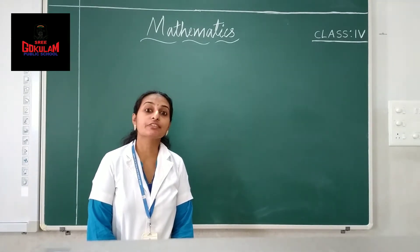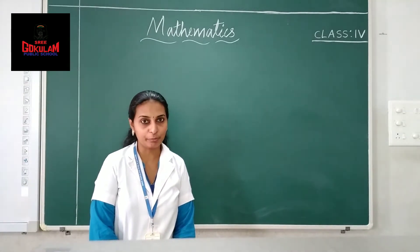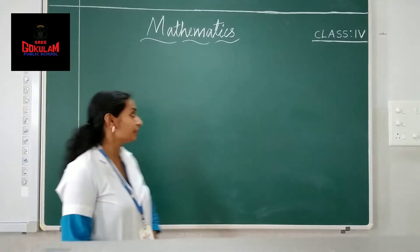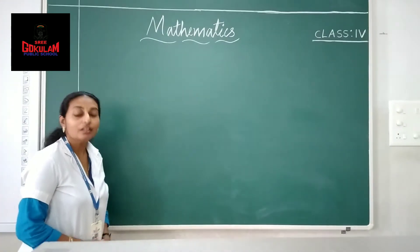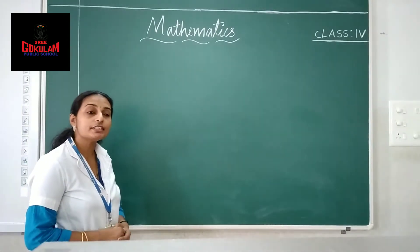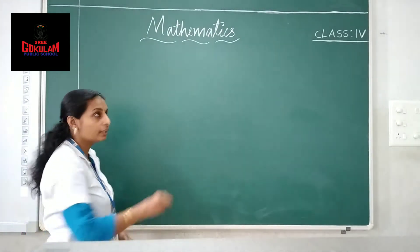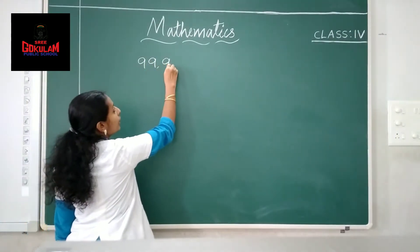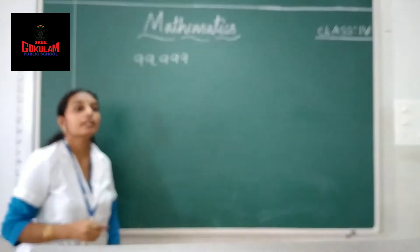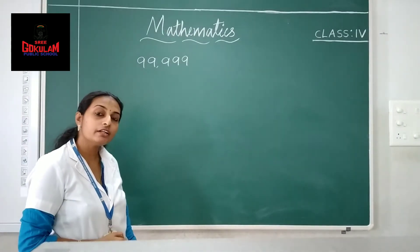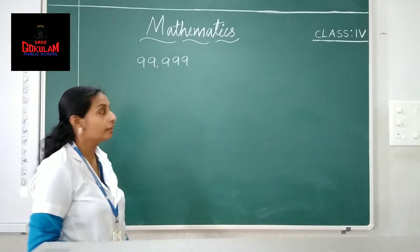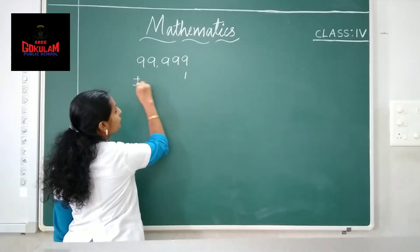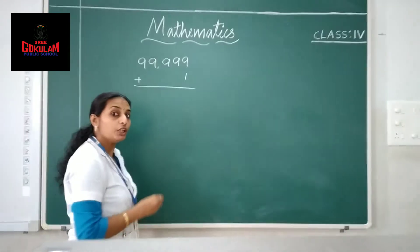See children, in our last class we discussed about 5-digit numbers. So today we are going to learn about 6-digit numbers. We know that the greatest 5-digit number is 99,999. When we add one to this number, we get a new number.